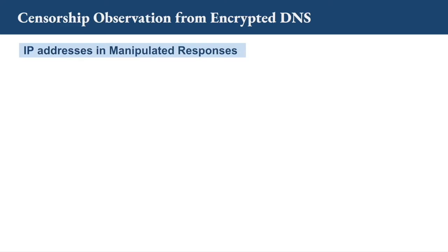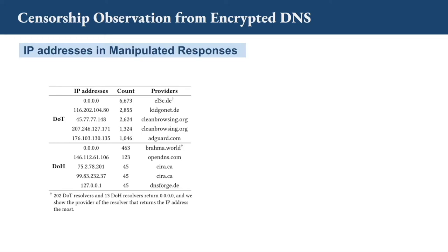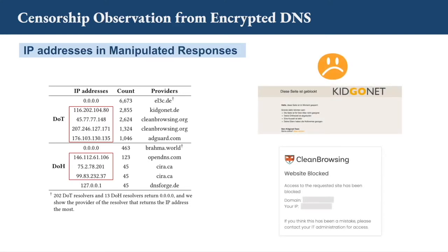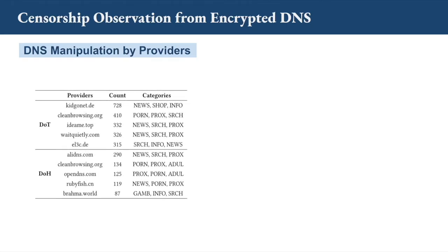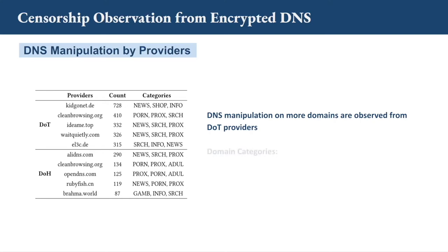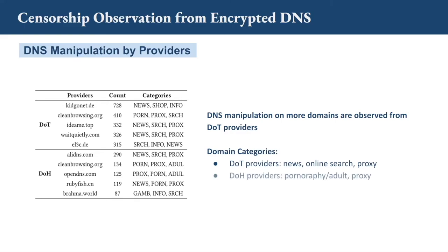What IP addresses does encrypted DNS return in manipulated responses? This table lists the most frequent IP addresses in manipulated responses. The address 0.0.0.0 is the most popular for both DoT and DoH resolvers. All other public IP addresses listed serve a block page showing that the content is blocked — two examples of such block pages are shown here. Grouping the manipulated responses by provider, more DNS manipulations are observed from DoT providers. The top three domain categories manipulated by DoT providers include news, online search, and proxy services, while for DoH, the top categories are pornography and proxy domains.